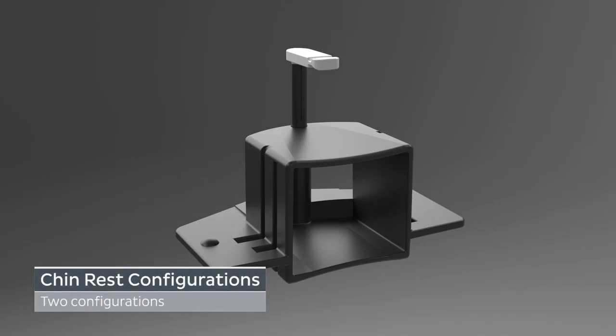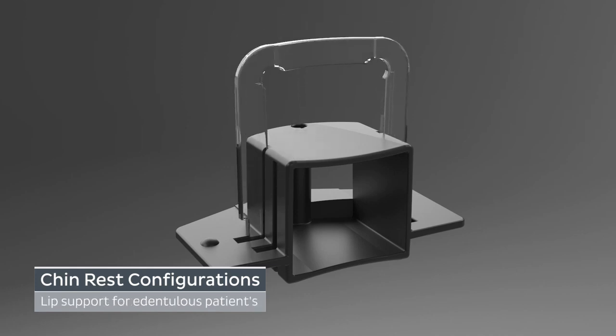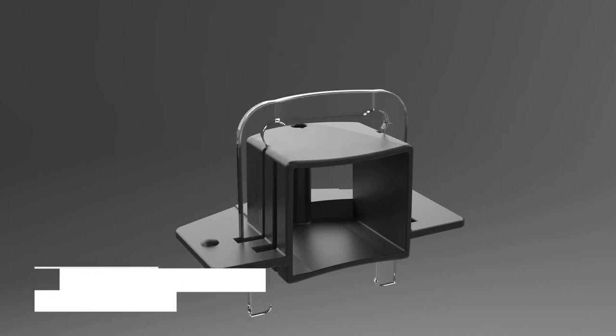There are two chin rest configurations that can be used when acquiring a 2D panoramic image: standard panoramic and pediatric panoramic. Both require the bite block and chin rest, except for edentulous patients that require the use of the lip support and chin rest.